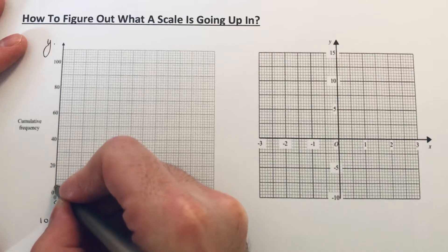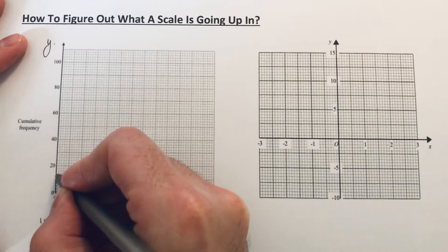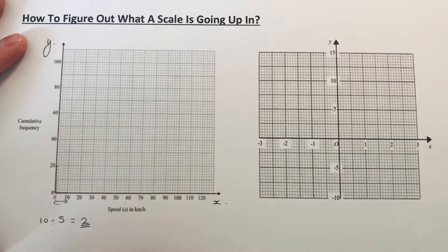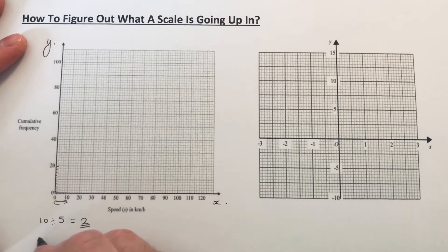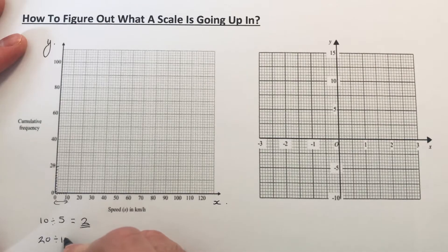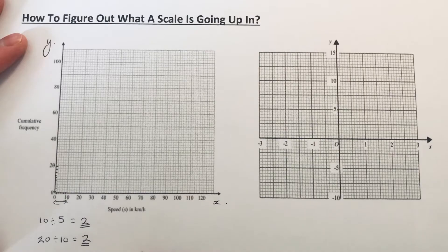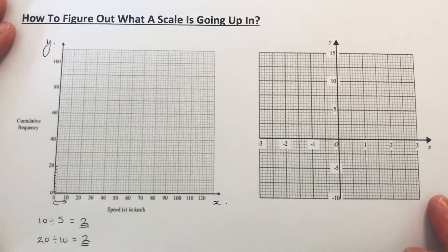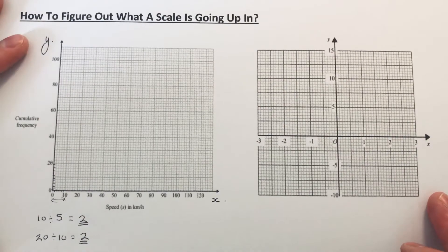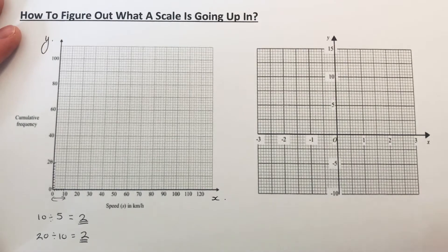So if we go twenty divided by ten, that answer is also two. So let's have a look at our second graph then. Let's figure out what each little square is along the x-axis first.